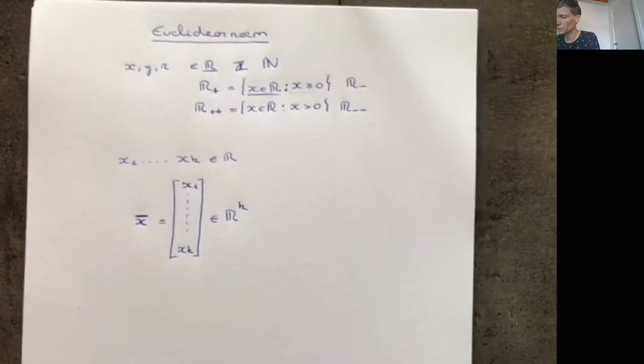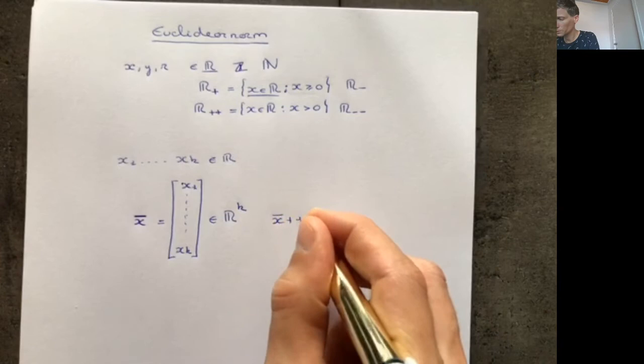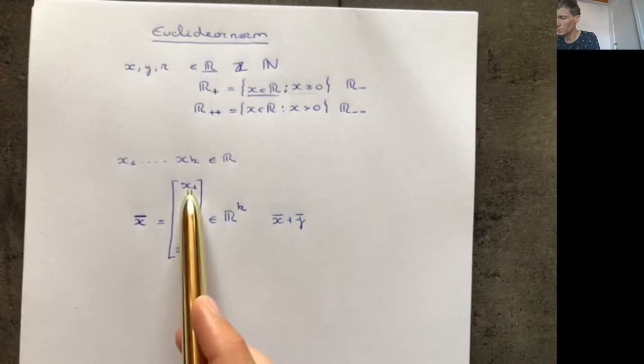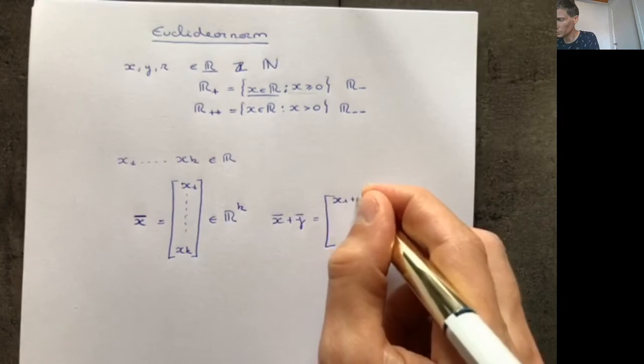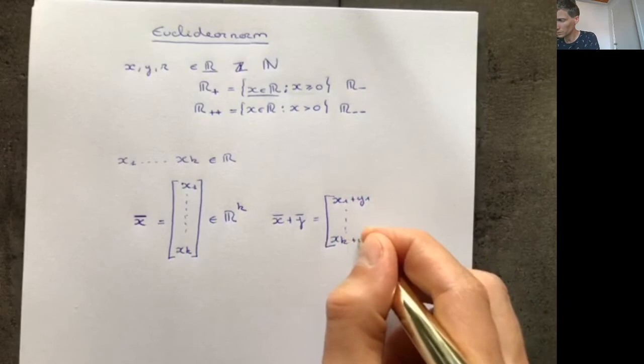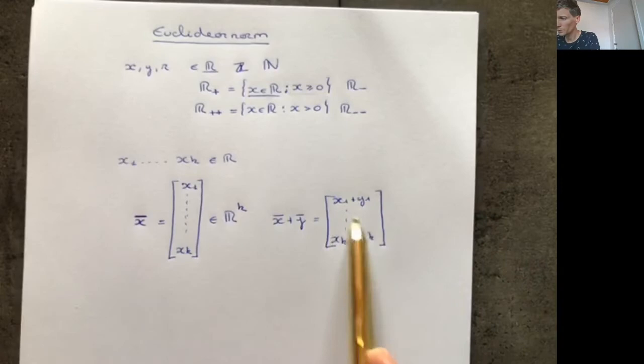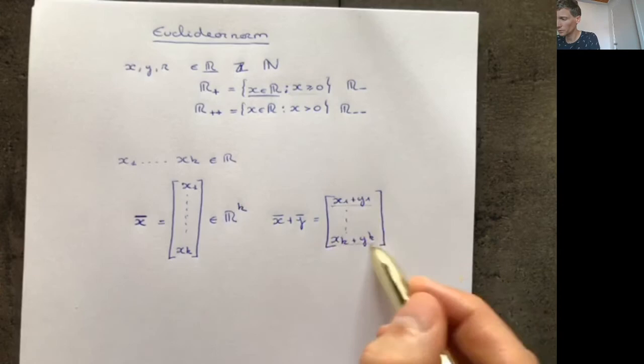So what can we do with vectors? We can add two vectors together. For example, if we have a vector x = (x₁, ..., xₖ) and a vector y = (y₁, ..., yₖ), then adding them gives (x₁ + y₁, x₂ + y₂, ..., xₖ + yₖ). So element by element, we add the two numbers together. This gives you a new vector of k numbers, called the vector x + y.